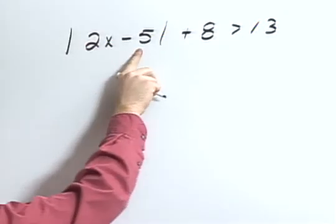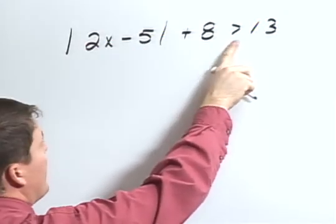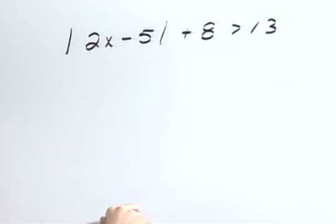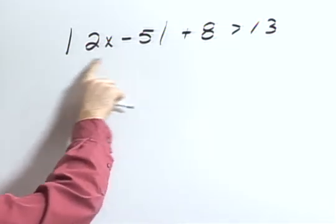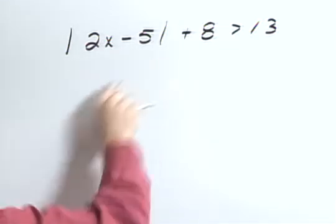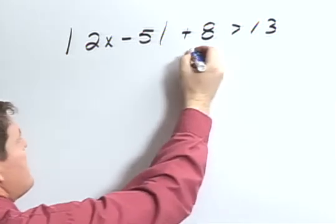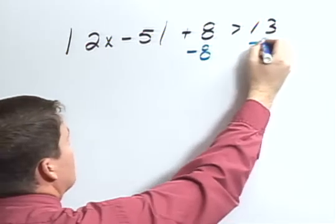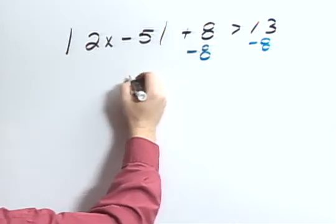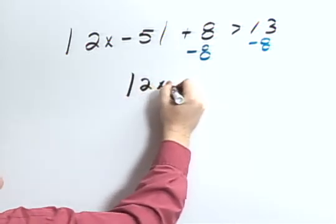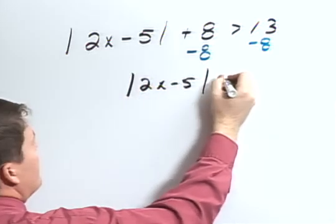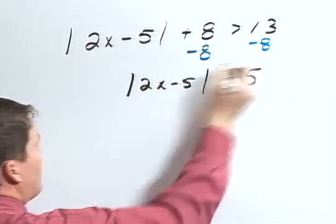The absolute value of 2x minus 5 plus 8 greater than 13. I want to first get the absolute value part by itself, so I'm going to subtract 8 from both sides. So I have the absolute value of 2x minus 5 is greater than 5.